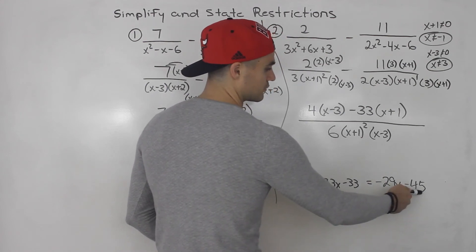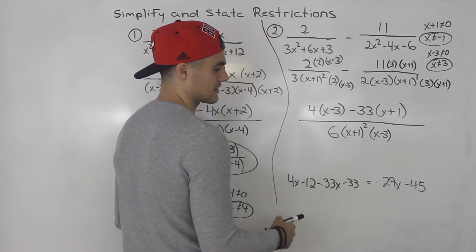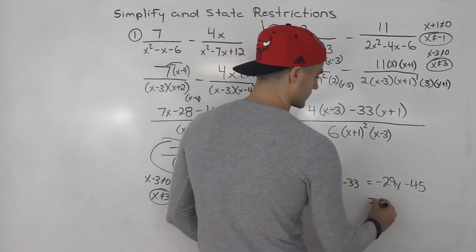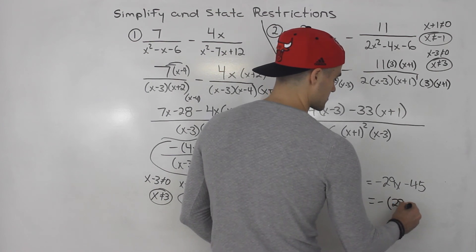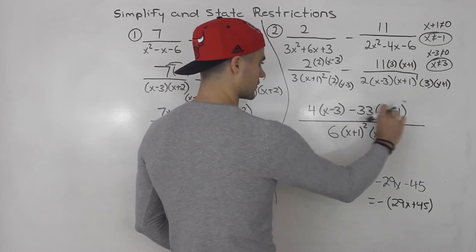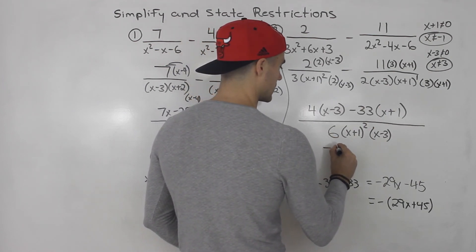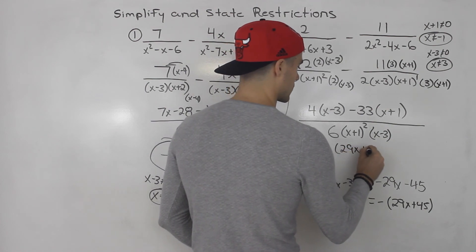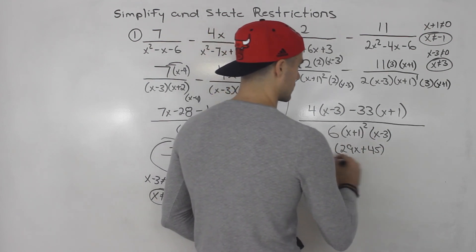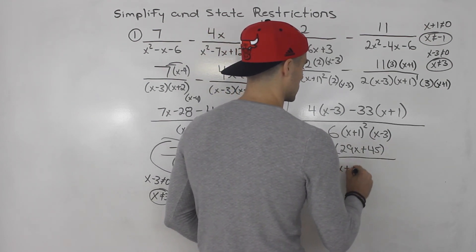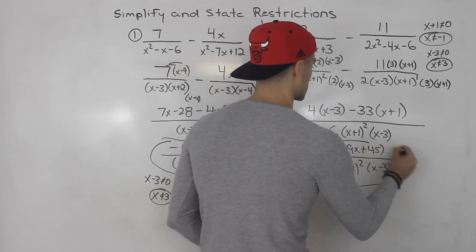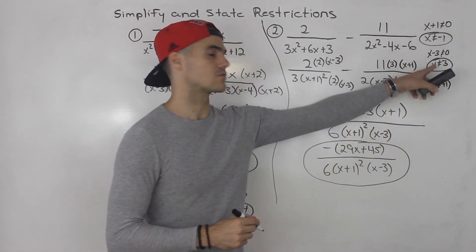The numerator can't simplify any further. Taking out the negative, we get minus bracket twenty-nine x plus forty-five. So the final answer is negative bracket twenty-nine x plus forty-five, all over six times bracket x plus one squared times bracket x minus three. And those are the restrictions.